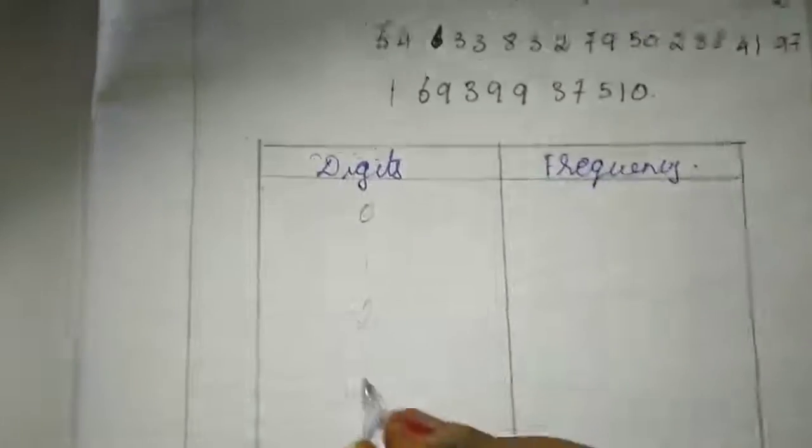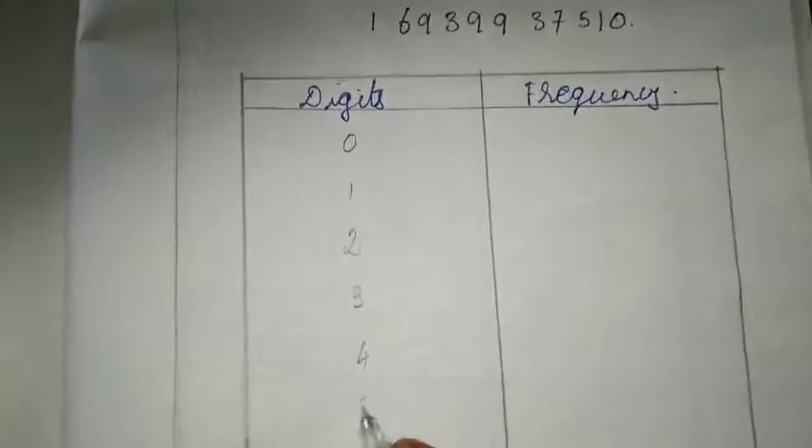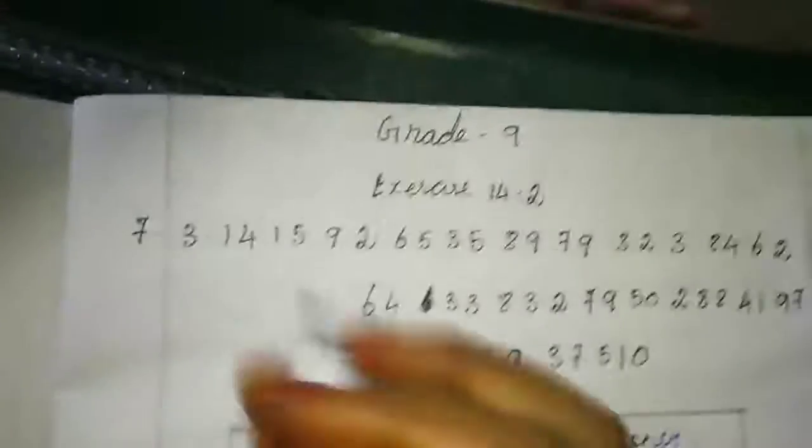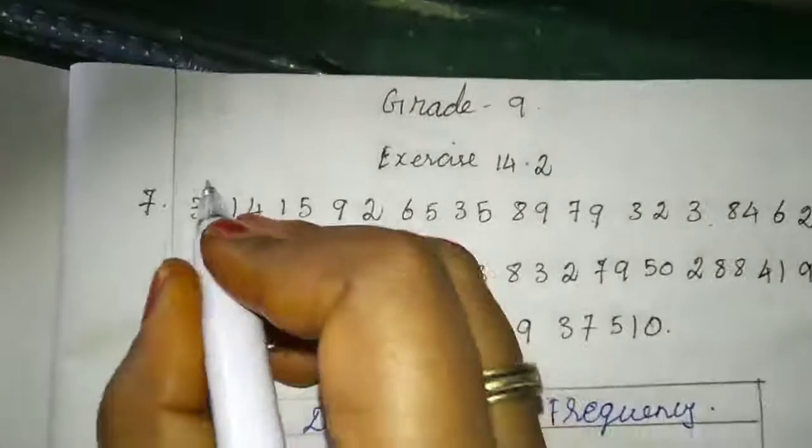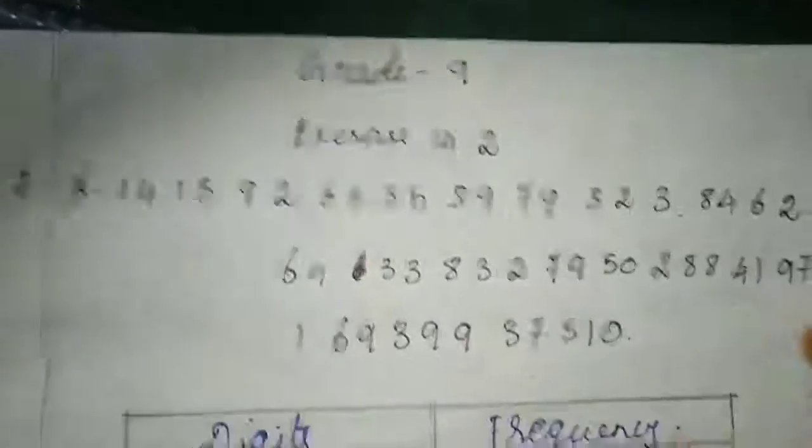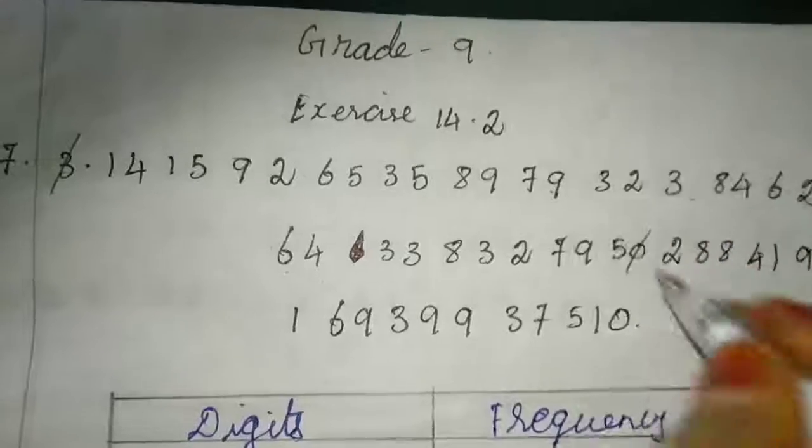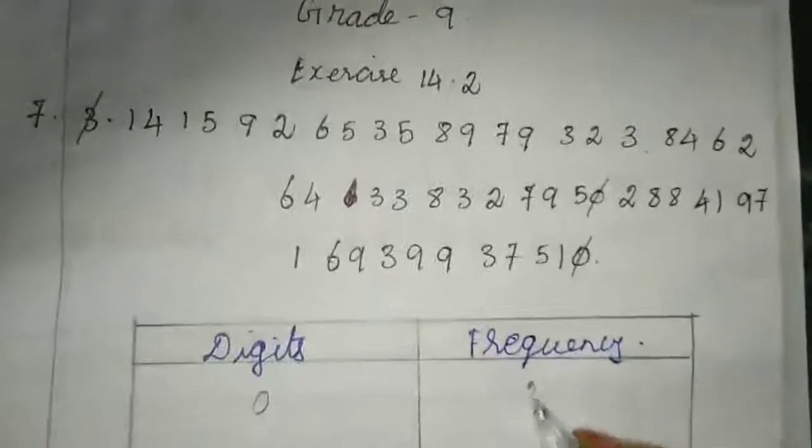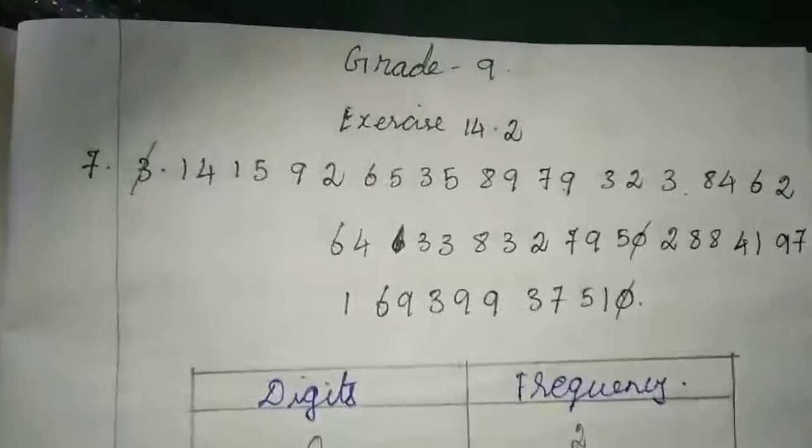0, 1, 2, 3, 4, 5, 6, 7, 8, 9. First we will refer for zero. Now after the dot only we want to refer, so zero three will not come. Just refer here how many zeros we have. One here, one there, so zeros we have two times.